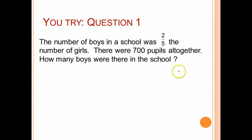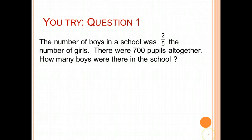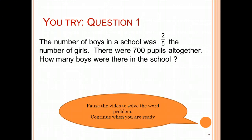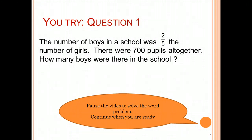Why not you try this question? The number of boys in a school was two-fifths the number of girls. There were 700 pupils altogether. How many boys were there in the school? Pause the video to solve the word problem, and continue when you are ready.